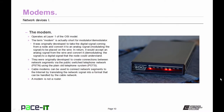Now let's move on to modems. The modem operates at layer 1 of the OSI model. The term modem is actually short for modulator demodulator. It was originally developed to take the digital signal coming from a computer and convert it to an analog signal — modulating the signal — to be placed on the wire. In return, it would accept an analog signal from the wire and convert it — demodulating the signal — to a digital signal that the node can understand. Modems were originally developed to create connections between network segments via the public switch telephone network, the PSTN, using the plain old telephone system, POTS. Cable modems can be used to connect network segments to the internet by translating the network signal into a format that can be handled by the cable network. Now, a modem is not a router — it is a point-to-point technology and it doesn't care where the networks are.